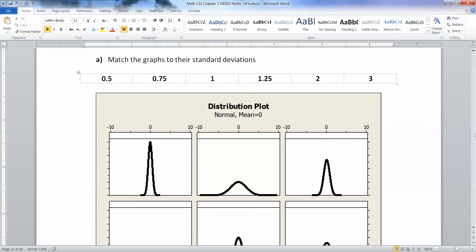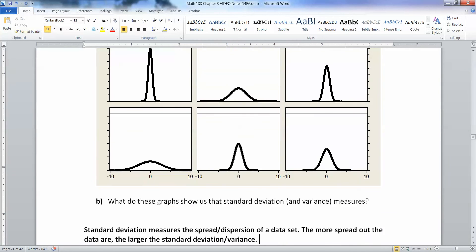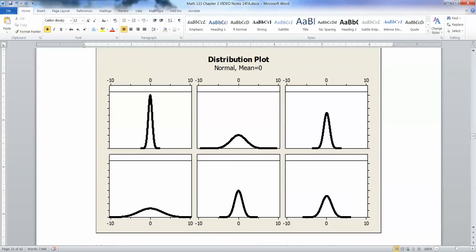So which one's which? One of them is 0.5, 0.75, one is 1, one is 1.25, one is 2, and one is 3. So remember that the standard deviation measures the deviation from the mean. And the mean in these cases is very obviously the center. So obviously, that's the mean at 0. So the question is, which one has the largest standard deviation? Which one has the smallest?